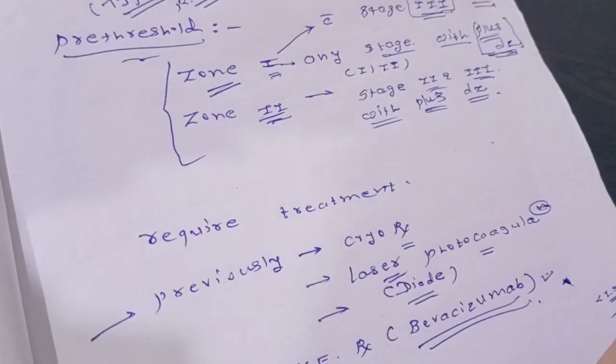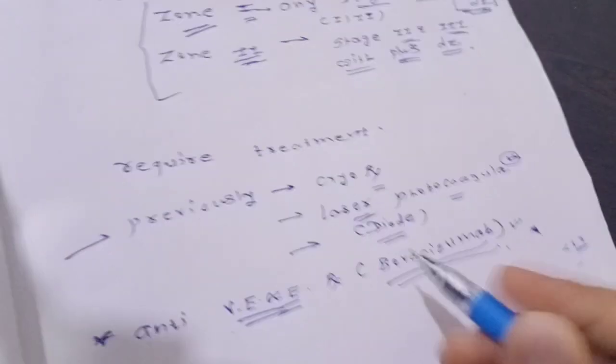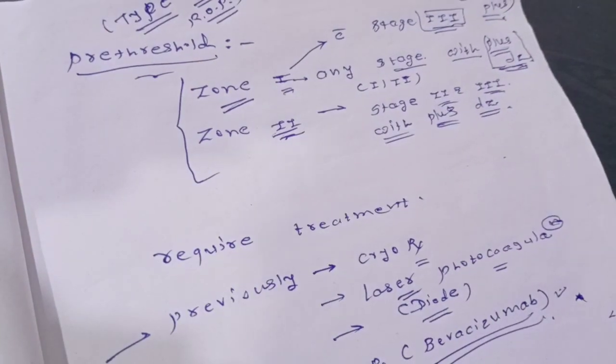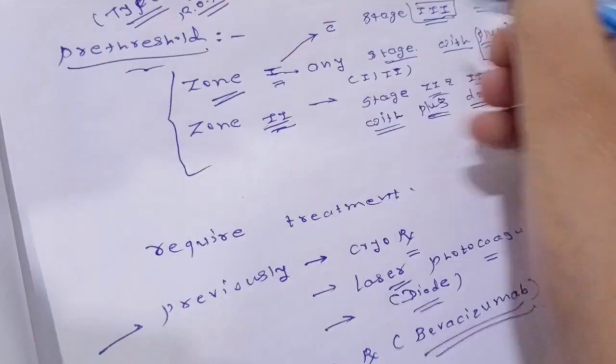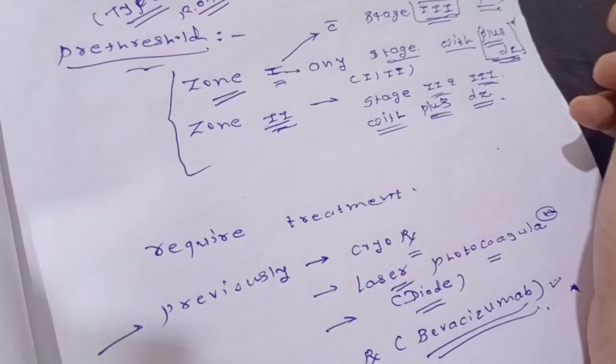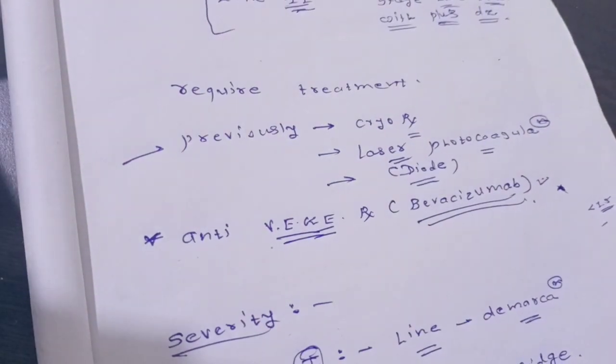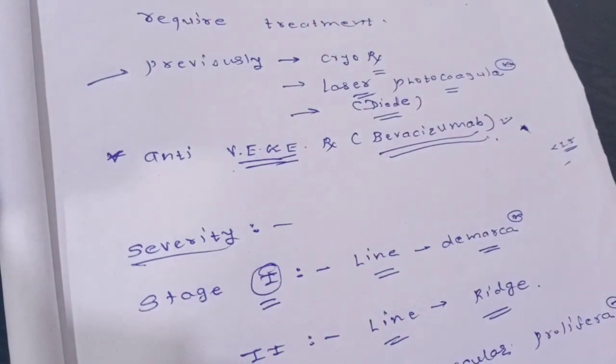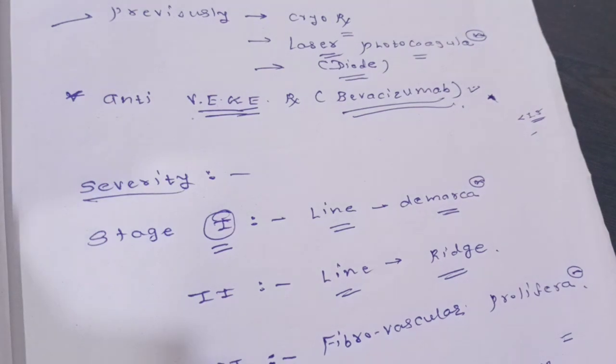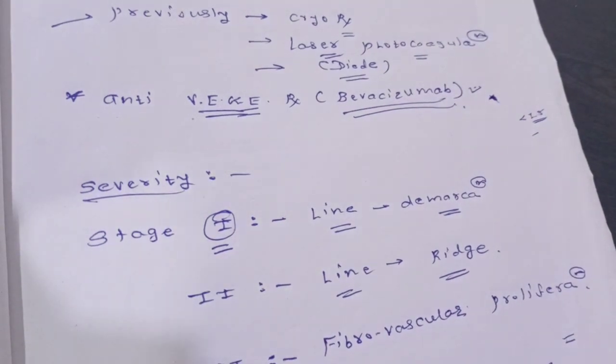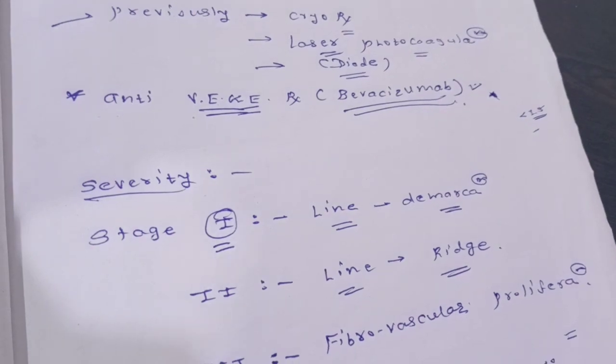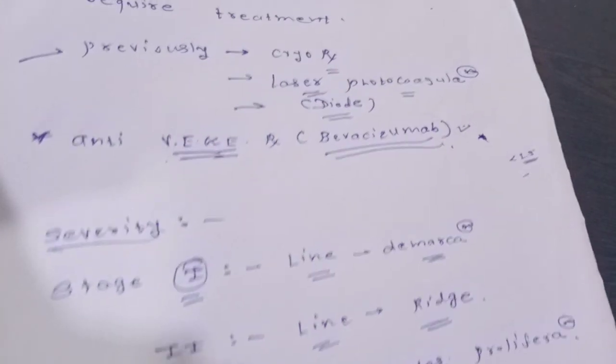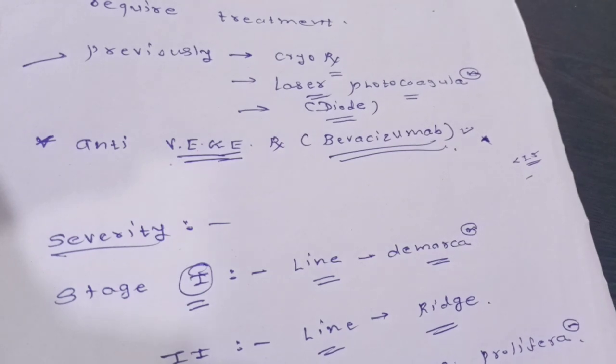One important note: line treatment never happens on its own. It requires plus disease—dilated artery or tortuous vein. Each and every topic about retinopathy of prematurity is must-to-know. You should read this one time, whether for MBBS, PG prep, MD, DNB, or DCH. This question appears frequently. If you are a pediatrician, you will encounter this a lot in your work. If there are any doubts, you can comment in the comment box. I can read it. Thank you.